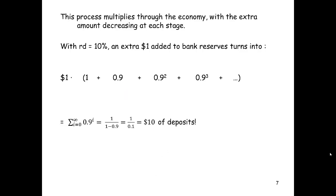This process multiplies through the economy, with the extra amount increasing at each stage. So if our reserve deposit ratio is 10%, an extra $1 added to bank reserves turns into the initial 1, plus that first loan of 0.9, plus the second loan of 0.9 squared, plus 0.9 cubed, and on and on. If we add up that infinite sequence, the $1 in reserves multiplies itself and becomes $10 of deposits.